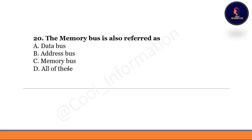Question 20: The memory bus is also referred to as — option A: data bus, option B: address bus, option C: memory bus, option D: all of these. The correct option is A, which is data bus.